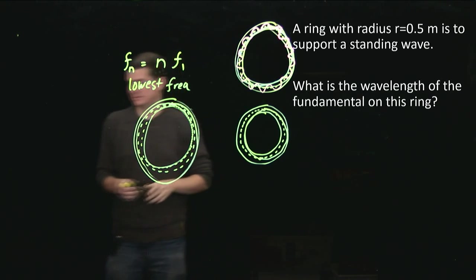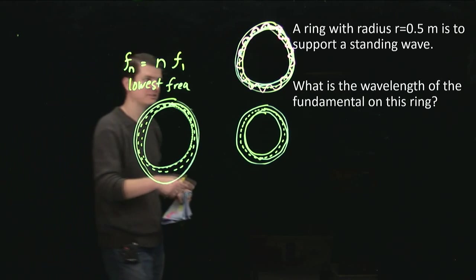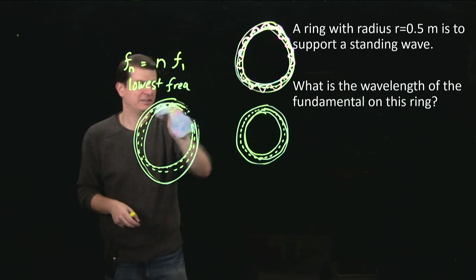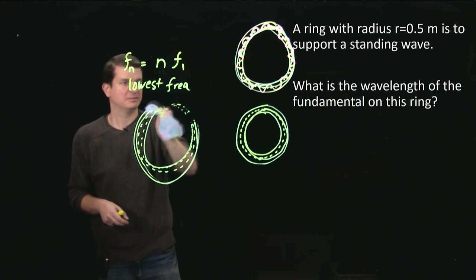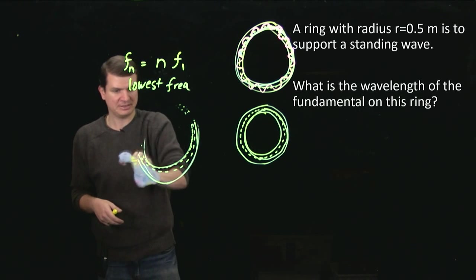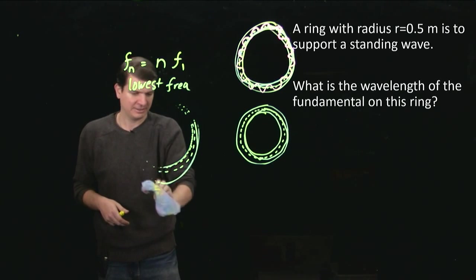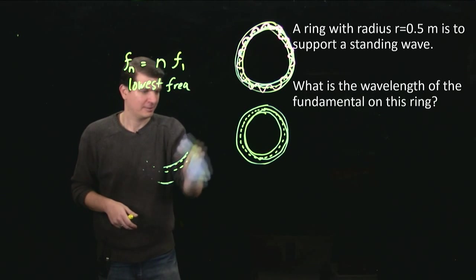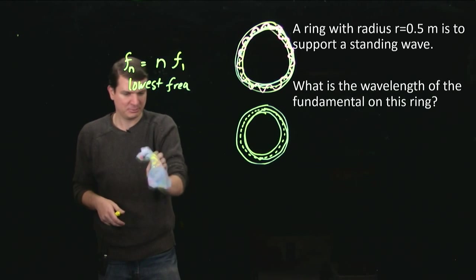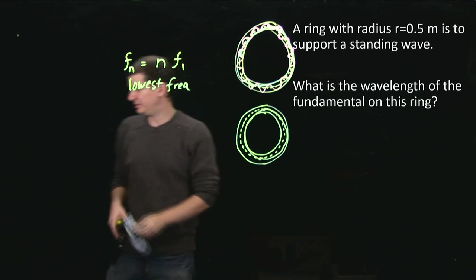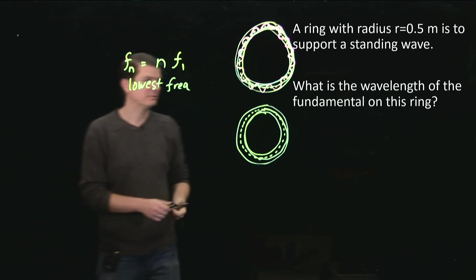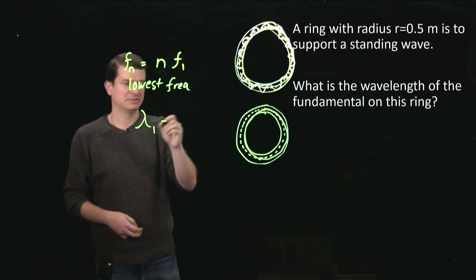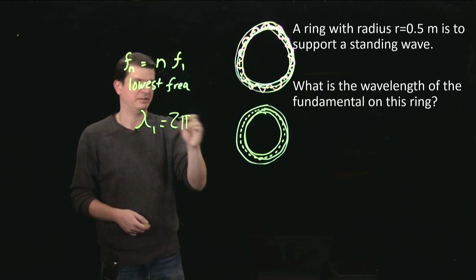And that means that its wavelength is exactly, because I fit one whole wavelength in there, it's simply the circumference of the circle, the total path that it can travel. Because it took one complete loop around the circle in order to get this back to where it started from. So lambda fundamental is equal to 2πr.